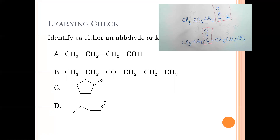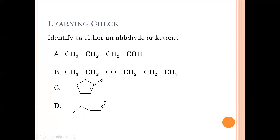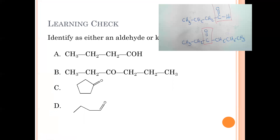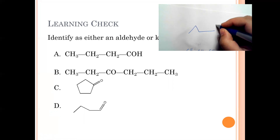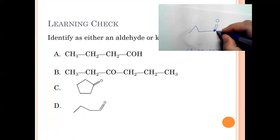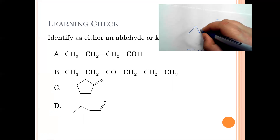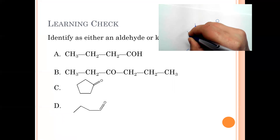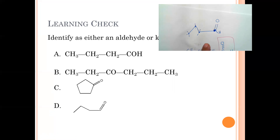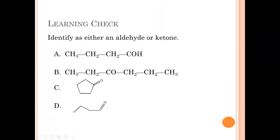Looking at C — because the carbonyl carbon is coming between two other carbons in the middle of the molecule — this is a ketone. And D, don't be fooled: D is at the end. When you see that line and a double bond O, don't forget that end carbon has an implied hydrogen attached to it. Because it's at the end, this is an aldehyde. So: aldehyde, ketone, ketone, aldehyde.